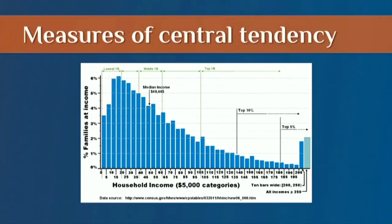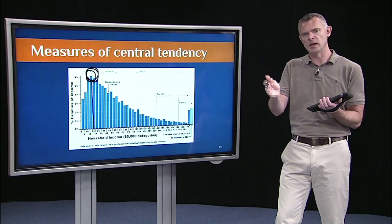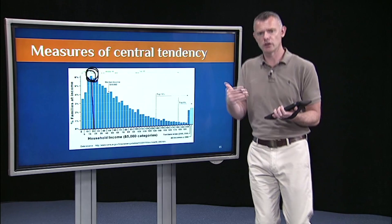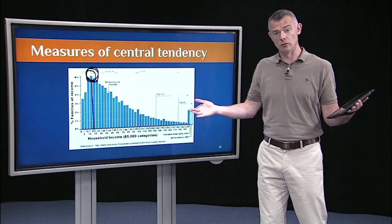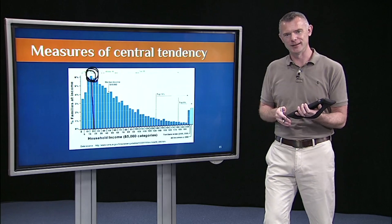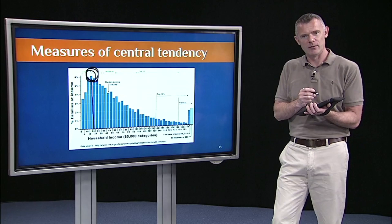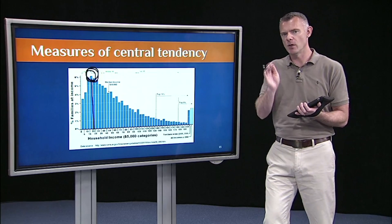The median is at about $49,445. And if you look at this, the mode is actually right about here — way down between about $15,000 and $20,000. So when you have this extremely skewed distribution like US household income, you're going to get a real difference between the mean, the median, and the mode, because it's hard to find a measure of central tendency that's representative of the entire group. It's just a good example to illustrate a non-normal distribution. If it was perfectly normal, then the mean, the median, and the mode would be just about the same.